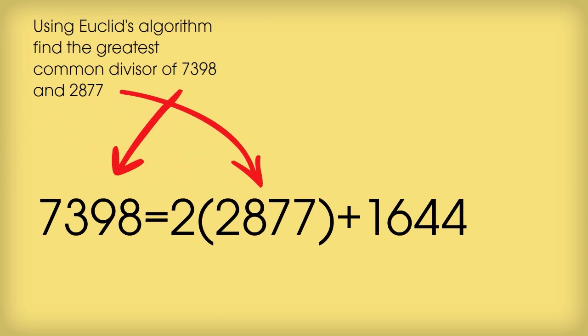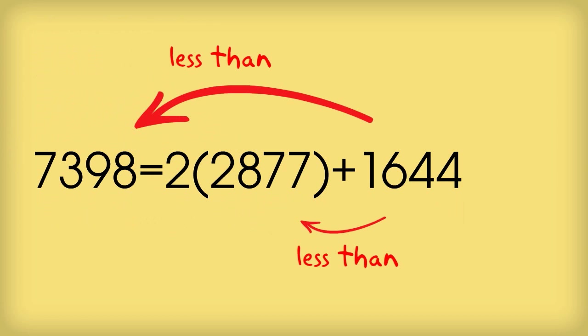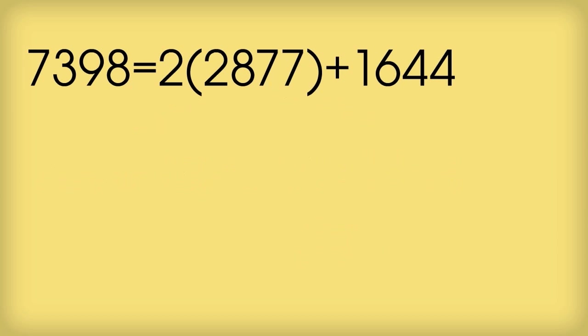We have 7398 equals 2 times 2877 plus 1644. The remainder theorem ensures that we can always do this and have a remainder, in this case 1644, that is less than both of the original two numbers. Now here's the really beautiful part about Euclid's Algorithm.